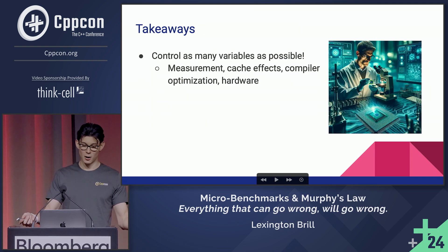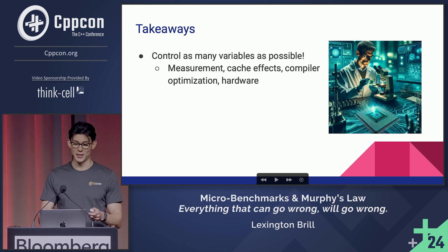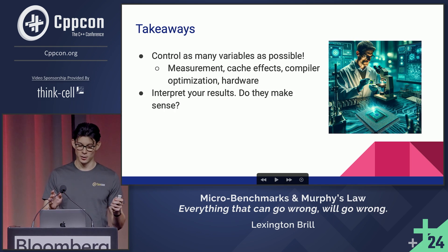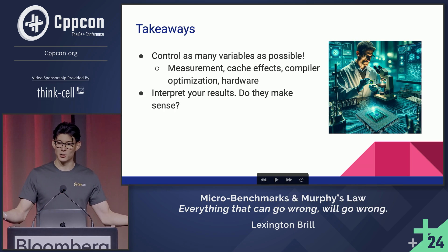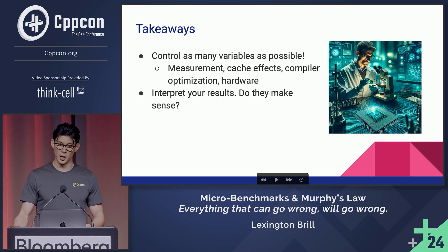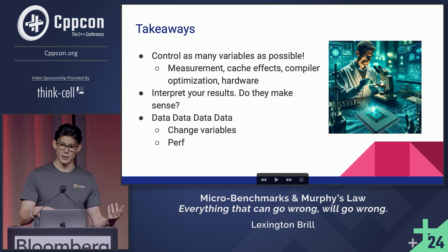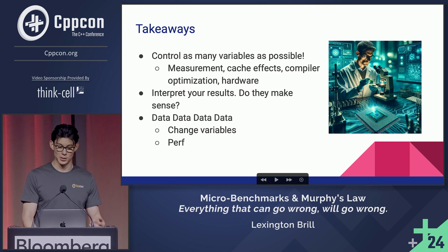The main takeaways: control as many variables as possible — things like measurement overhead, cache effects, compiler optimization, and hardware. Lock these down to make sure your operations are measured as accurately as possible. Interpret your results — do they make sense? If an L2 cache read is taking 30 to 40 cycles, that seems about twice as long as expected. Get more data: read two cache lines instead of one and see if it's about twice as long. If not, use a tool like perf to dig deeper.